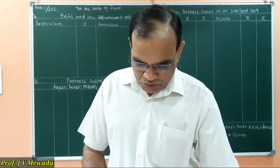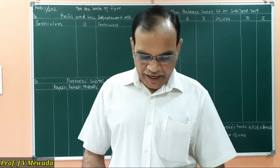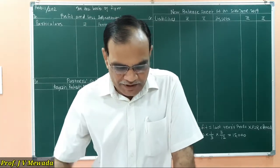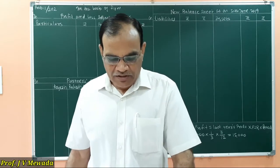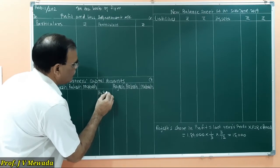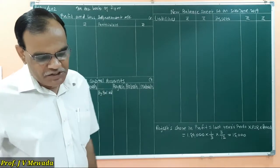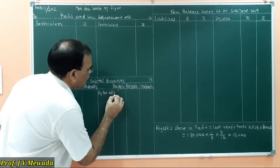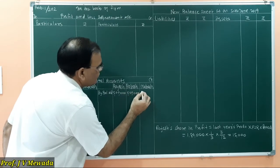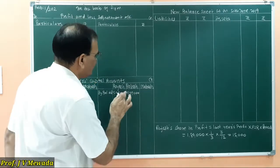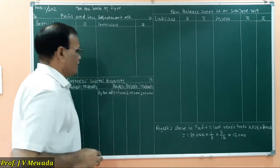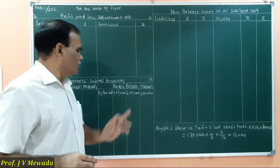We transfer the items of the balance sheet, liability side as well as asset side. We are given the capital of Rajesh, Rakesh and Mahesh. In the capital account on the credit side, I will write 'By Balance b/d': capital is 5 lakh, 2 lakh, 2 lakh. The first person's capital is 5 lakh, second partner's capital is 2 lakh, and third partner's capital is 2 lakh — so 5 lakh, 2 lakh, 2 lakh by balance brought down, shown on the credit side.